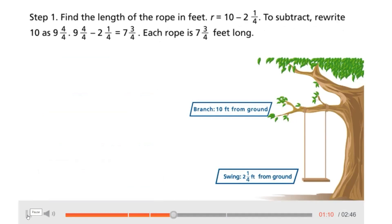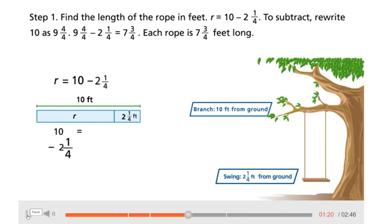Step 1: Find the length of the rope in feet. R equals ten minus two and one-fourth. To subtract, rewrite ten as nine and four-fourths. Nine and four-fourths minus two and one-fourth equals seven and three-fourths. Each rope is seven and three-fourths feet long.